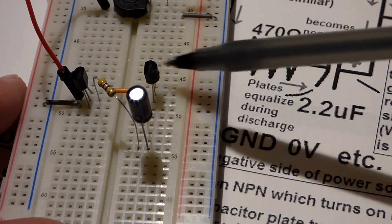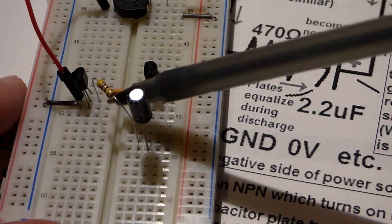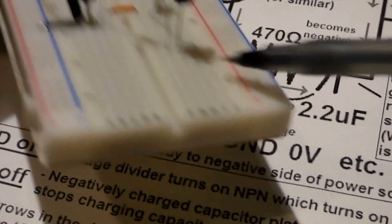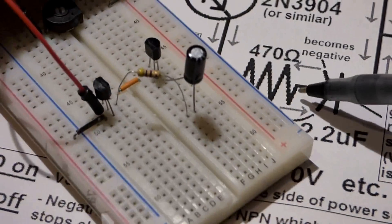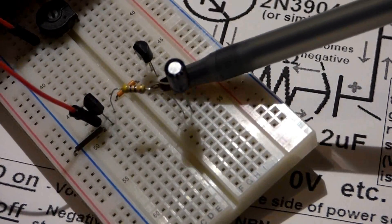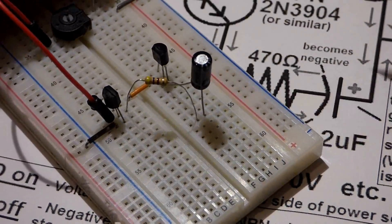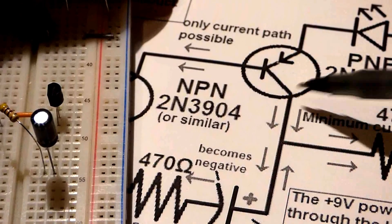So in this case we're using a 2.2 microfarad capacitor, as you can see here, they're connected there. But first the resistor comes from the middle pin of the NPN transistor, the base, to the negative side. It's hard to see but there's dashes right there. And then the positive side of the capacitor comes to this bottom pin of the transistor, which in this case is the collector right there.